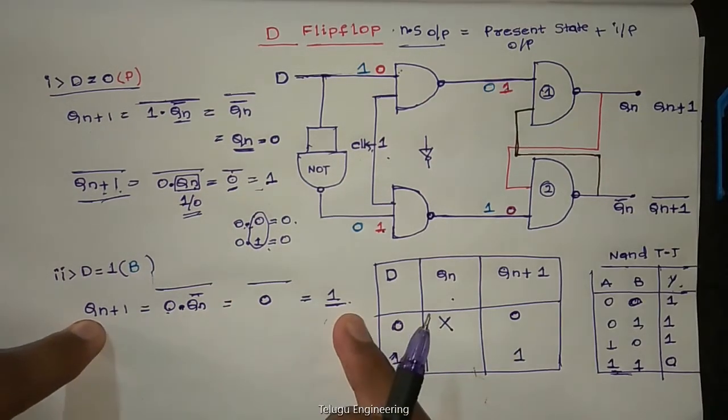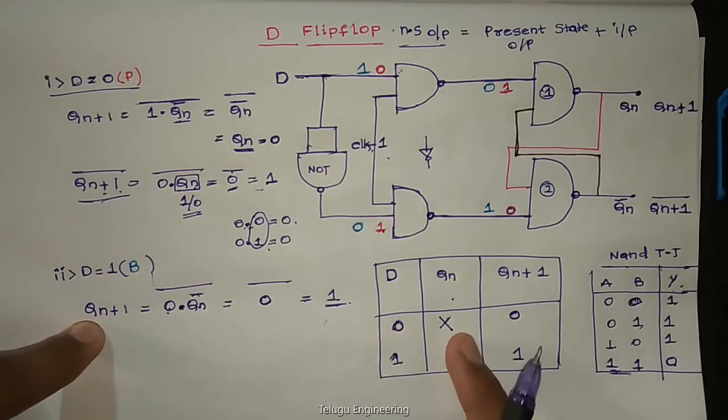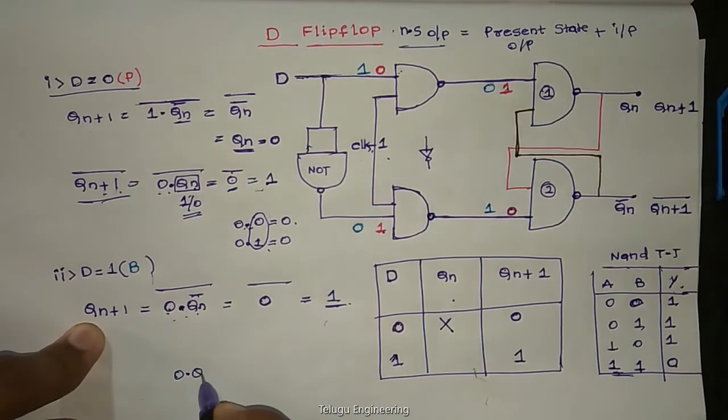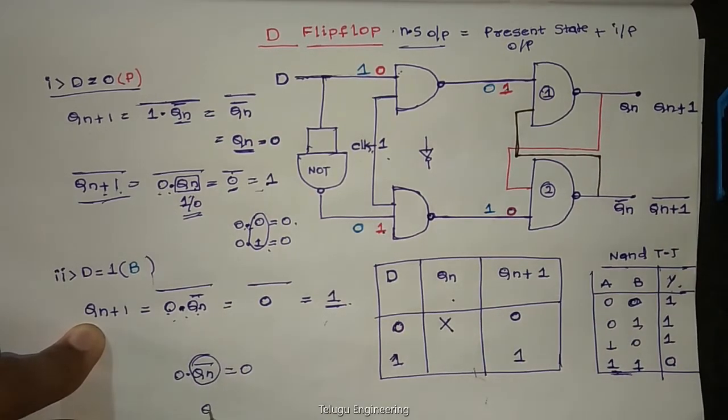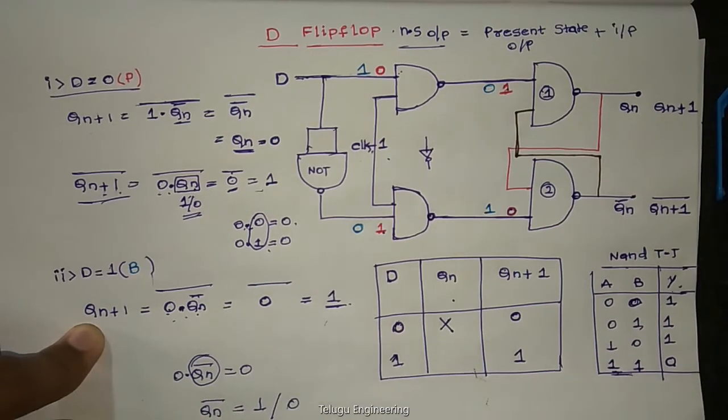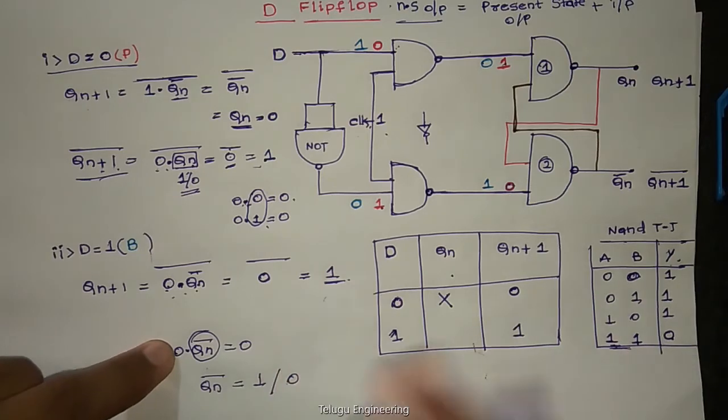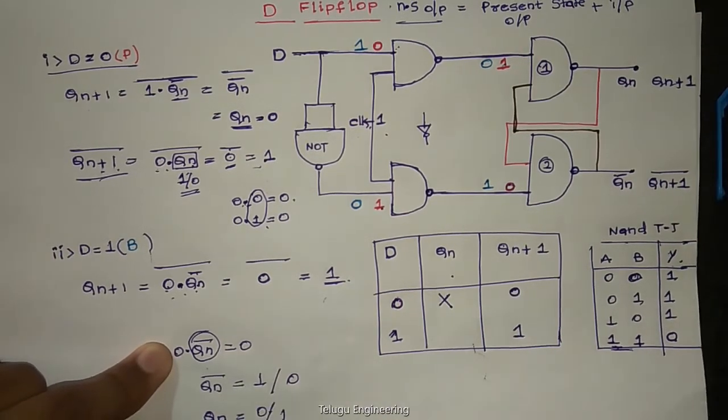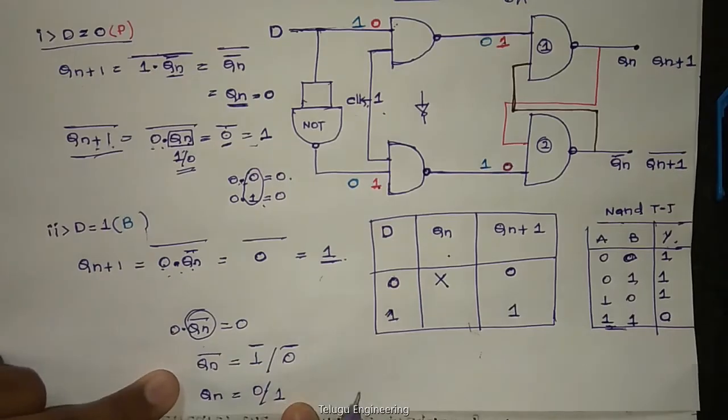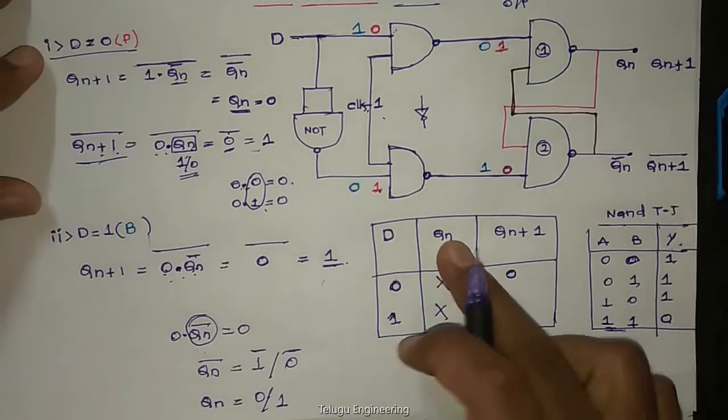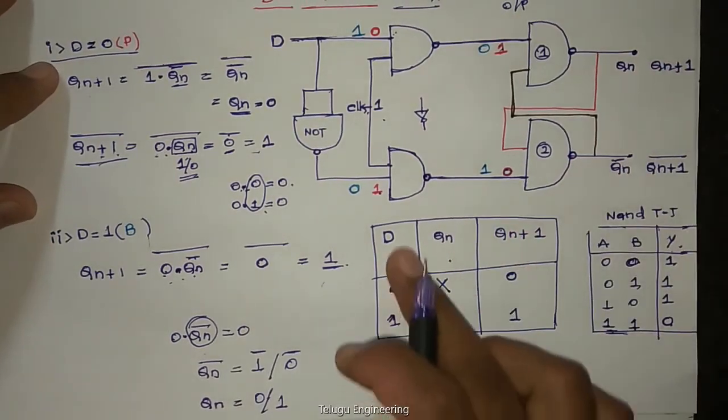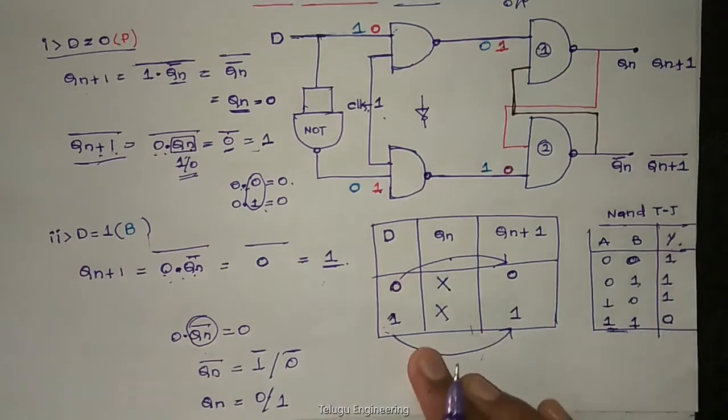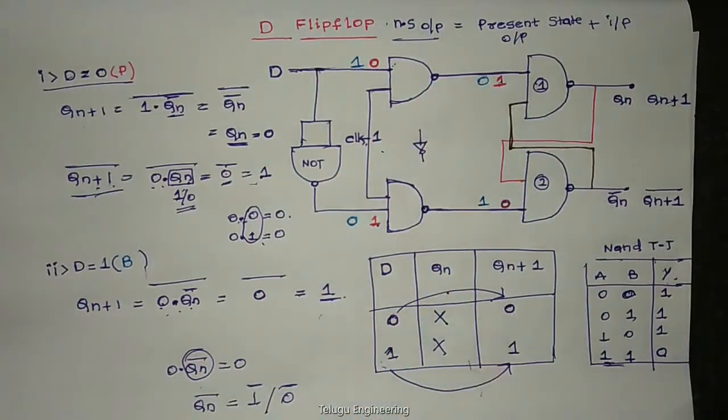Qn+1 next state output value we got. Here zero dot Qn, here zero dot Qn bar. So zero dot Qn bar is always equal to zero, whether Qn bar equal to 1 or 0, we don't care. Irrespective of values of the previous state output, when D is 0, output is 0. D is 1, output is 1. Data input is the output. That's why we call it D flip-flop. So hope you understand, thank you for watching this video.